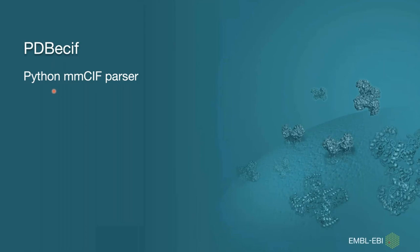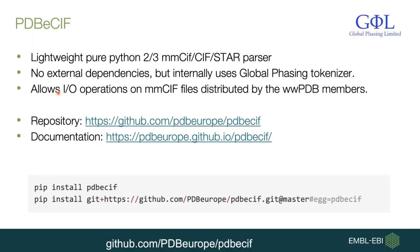The first package I'm going to talk about is called PDBE-SIF, and it's a Python mmCIF parser. PDBE-SIF is a lightweight, pure Python parser with no external dependencies, though internally it uses a tokenizer developed by the company Global Phasing. It allows input and output operations on mmCIF files distributed by WWPDB members. There is extensive documentation available, and you can install it from PyPI or directly from the GitHub repository.